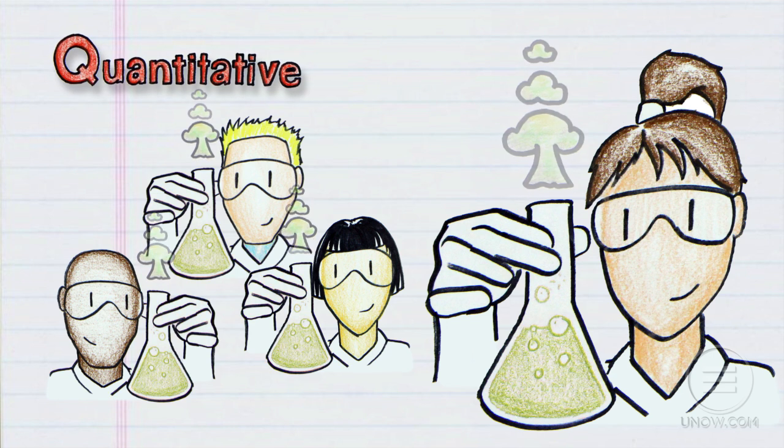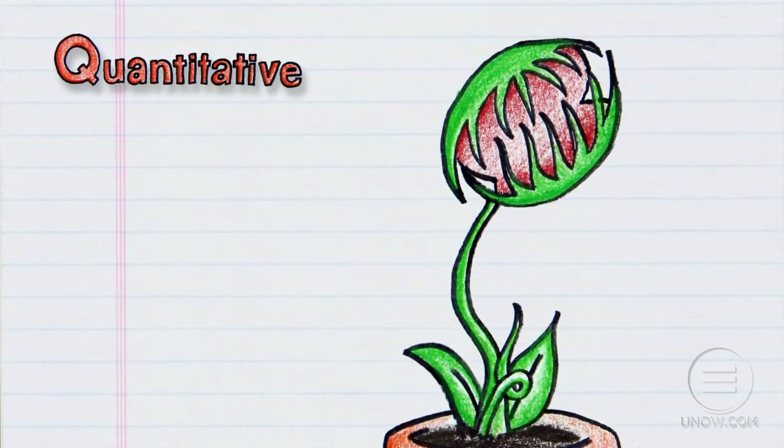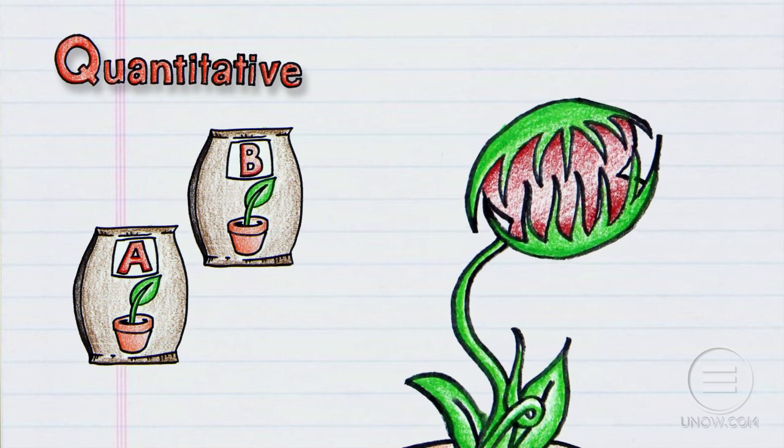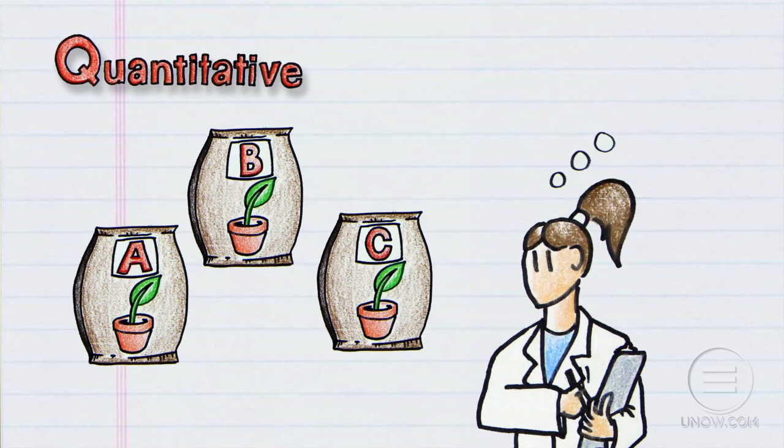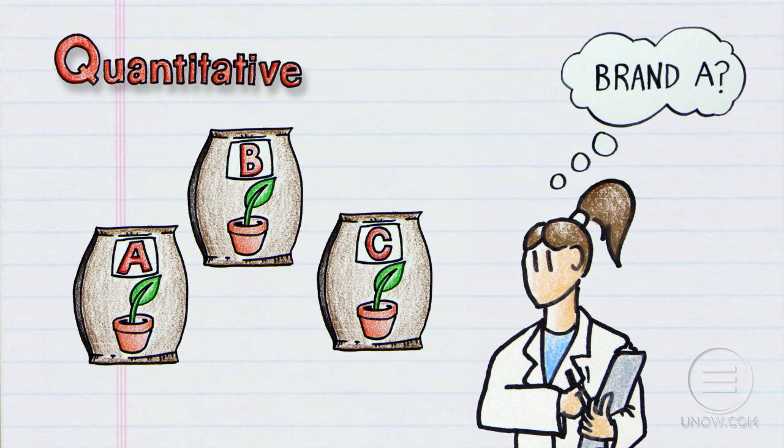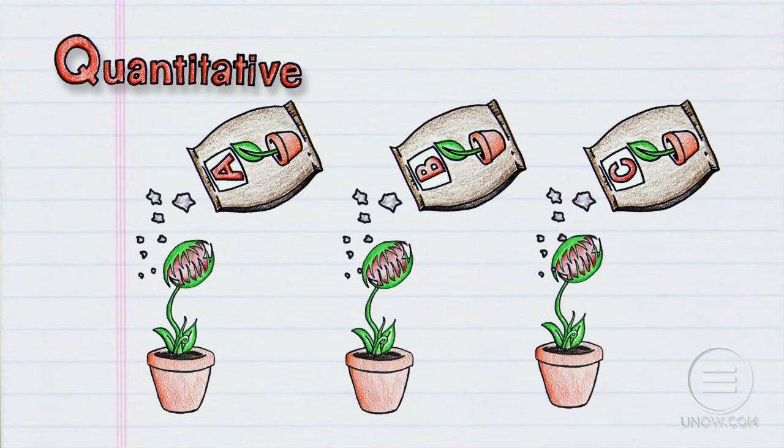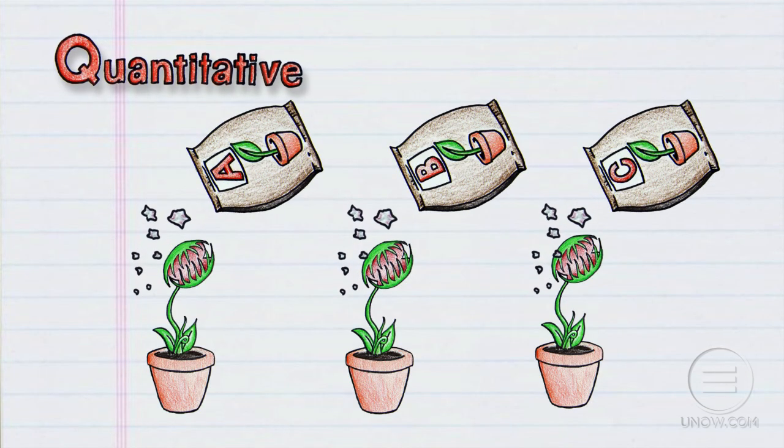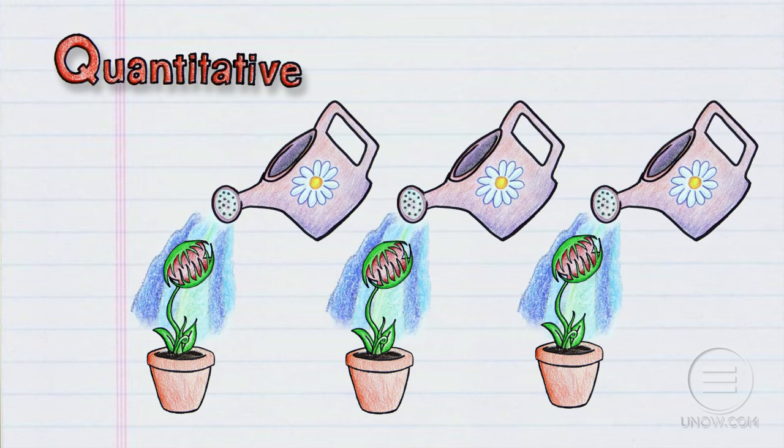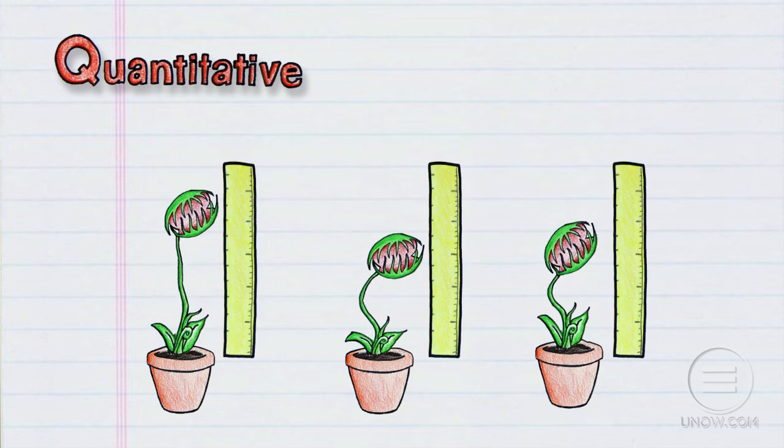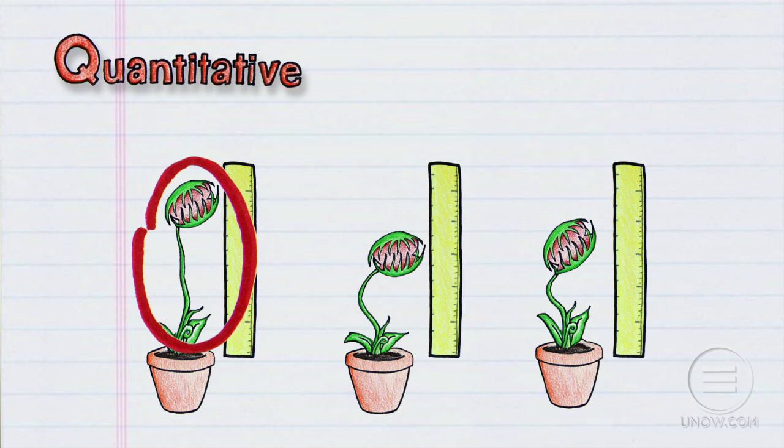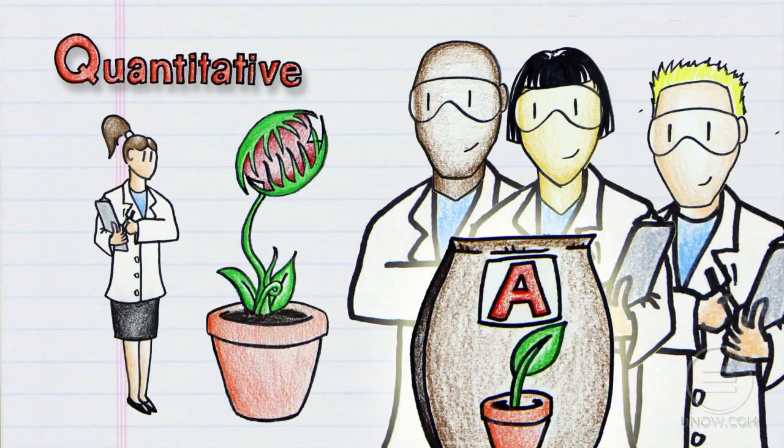Let's say you want to find out which leading brand of fertilizer works best on Venus flytraps. You would start with a hypothesis, for instance, that brand A is the best. You would test the different fertilizers on a large sample size of plants, carefully control for environmental conditions, and precisely measure all of the plants. If your conclusion is right, then other people should get the same result when they repeat the test.